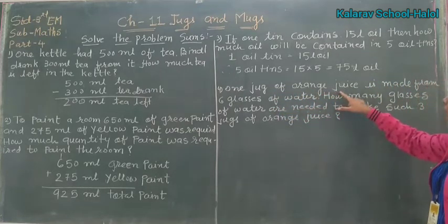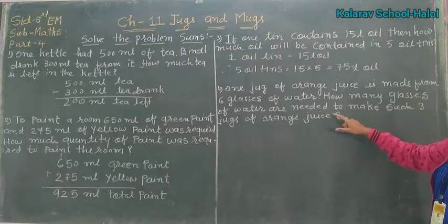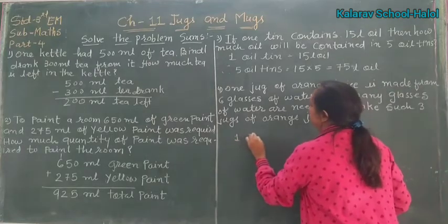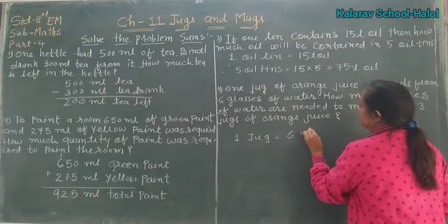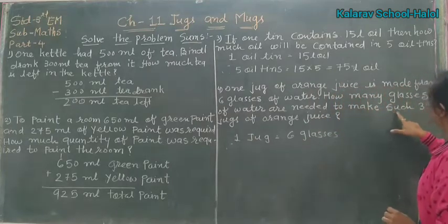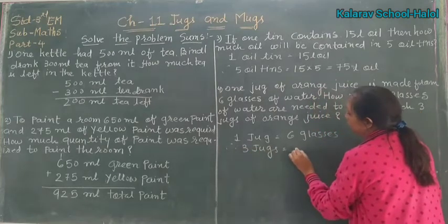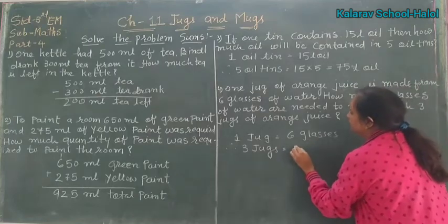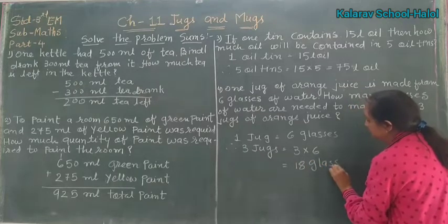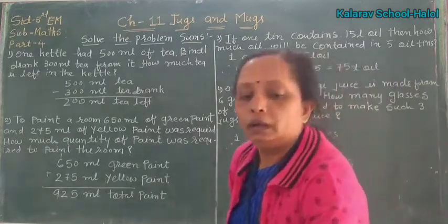One jug of orange juice is made from six glasses of water. How many glasses of water are needed to make three jugs of orange juice? One jug ke liye six glasses chahiye, toh kitna glasses chahiye? One more question.